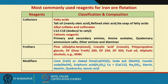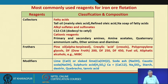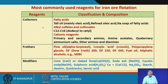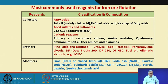Let me give you examples of some collectors, frothers, and modifiers. For iron ore beneficiation — which is very important these days — the most commonly used reagents for iron ore flotation include, as collectors: fatty acids, tall oil (mainly oleic acid), refined oleic acid, sodium soap of fatty acids, alkaline sulfates and sulfonates, C12–C16 dodecyl to cetyl components, the cationic reagents such as primary and secondary amines, amine acetates, quaternary ammonium salts, ether amines, and IMIs.